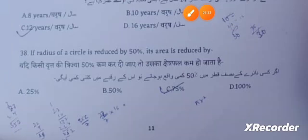If the radius of a circle is reduced by 50%, its area is reduced by 75%.